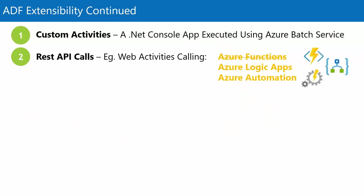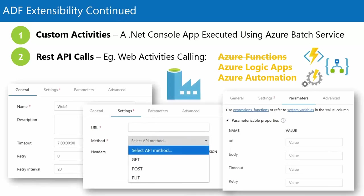Other ways to extend Data Factory: we can call REST APIs — everything has a REST API now. We can hit those REST APIs with the Data Factory web activity and do our usual POST requests and things. Azure Functions used to require a web activity, but Functions is now supported as a first-class citizen in linked services.